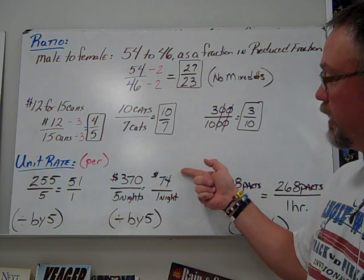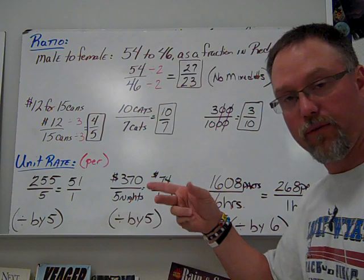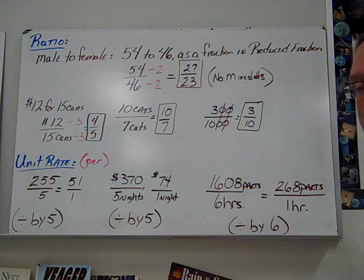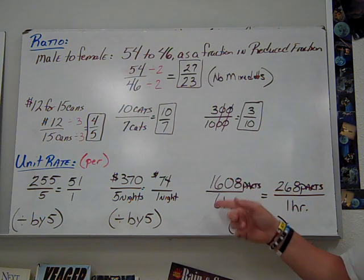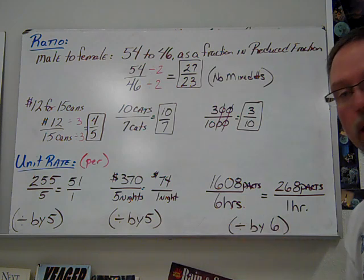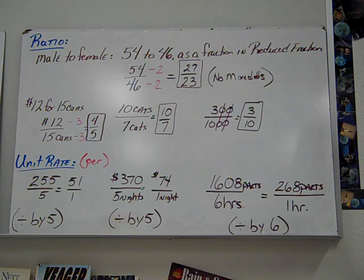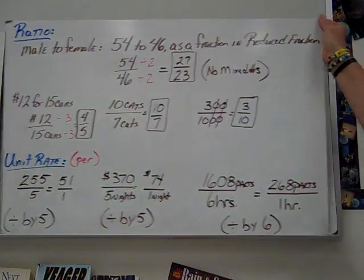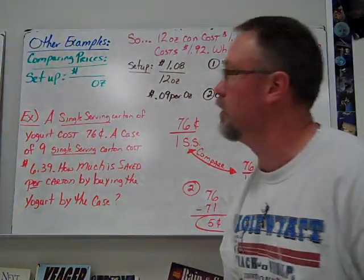You've got to be careful with how they ask you to write the answer. They may have you flip it over. Factories use this a lot. 1,608 parts in 6 hours. How many in one hour? We divide by 6 and find that it's 268 parts per hour. A lot of them will go in pretty even, so you won't have to work with decimals. Since we've been past Chapter 5, you can use calculators.